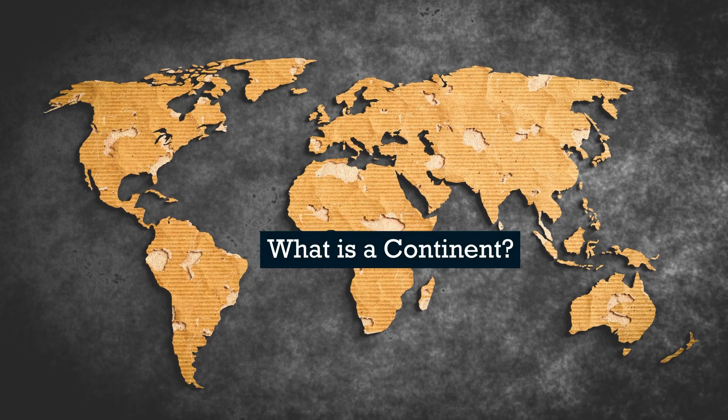A continent is a large, continuous mass of land that is separated from other landmasses by natural boundaries such as oceans, seas, or other significant geographical features. Continents are among the largest units of land division on Earth and help organize the planet's geography into distinct regions.